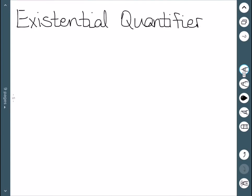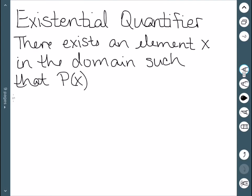Next, we'll define the existential quantifier. The existential quantifier tells us that there exists an element x in the domain such that our predicate P(x) is true.